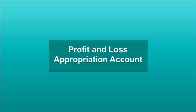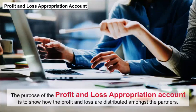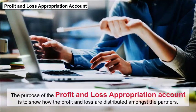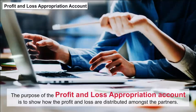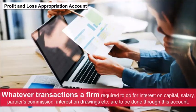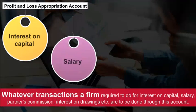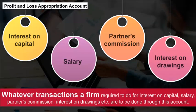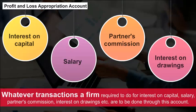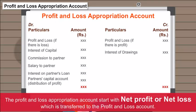Profit and Loss Appropriation Account: The purpose of the profit and loss appropriation account is to show how the profit and loss are distributed amongst the partners. Whatever transactions a firm is required to do for interest on capital, salary, partners' commissions, interest on drawings, etc. are to be done through this account. The profit and loss appropriation account starts with net profit or net loss, which is transferred from the profit and loss account.